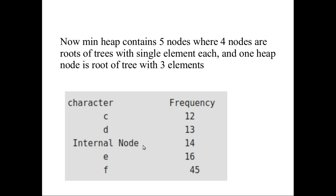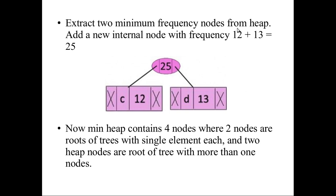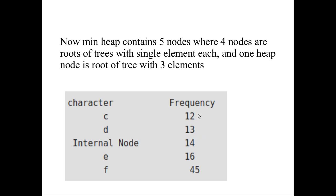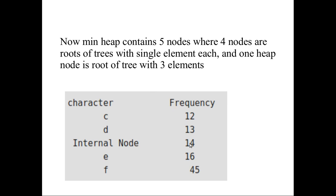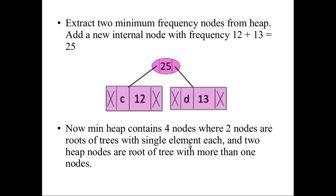Now there are five nodes — four root nodes each with a single element and one heap node which is the root with three elements. Next, choose the two minimum frequency nodes from the heap again. The values are 12 and 13; the internal node of 14 should be arranged according to frequency. So 12 and 13 are the next two minimum nodes. Add them and create an internal node: 12 plus 13 equals 25.